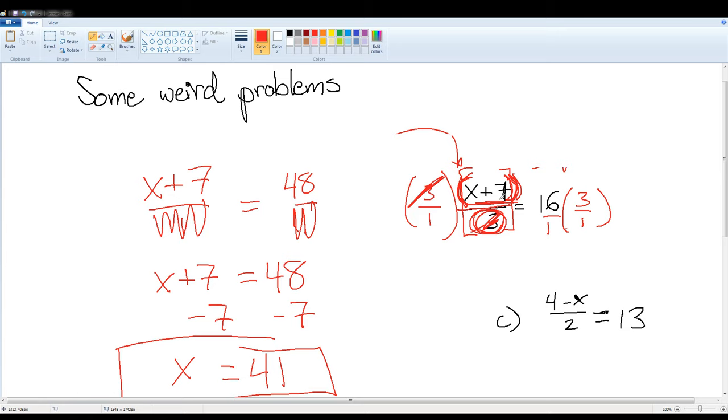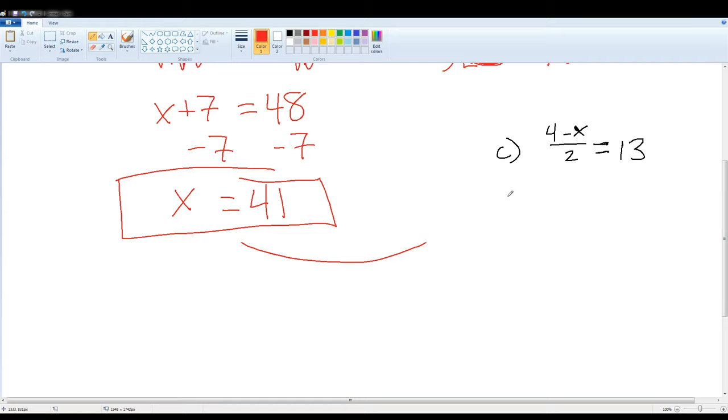Okay, what you should have done is multiplied by 2 over 1, and you're going to multiply the whole fraction. And if you multiply on the left, you're going to multiply on the right by 2 over 1. That cancels out and you end up with just 4 minus x equals 26.